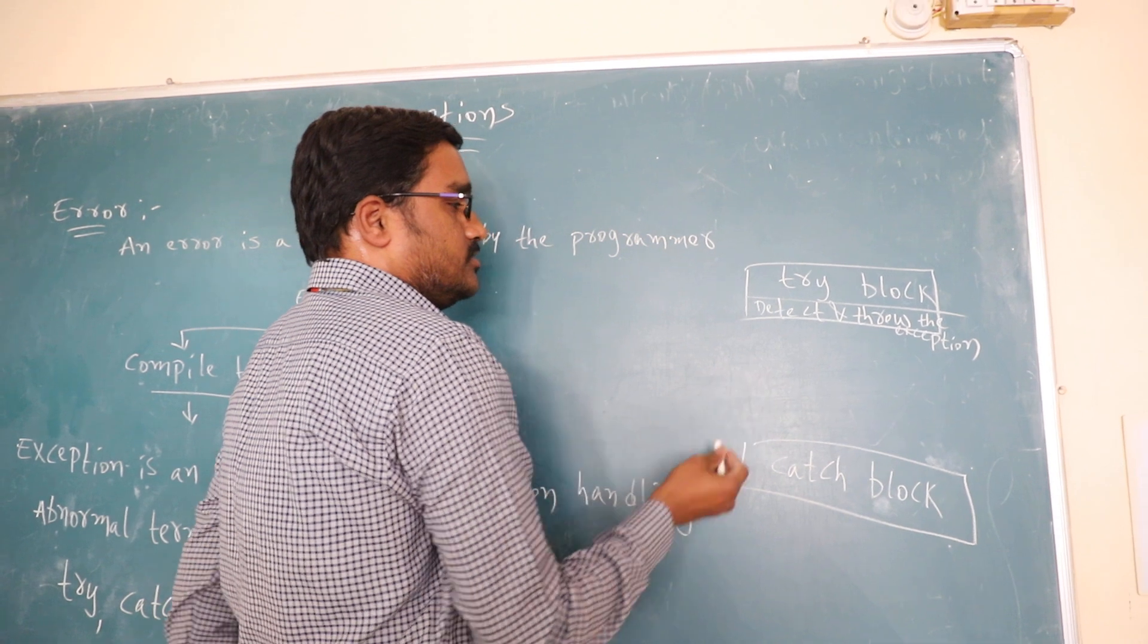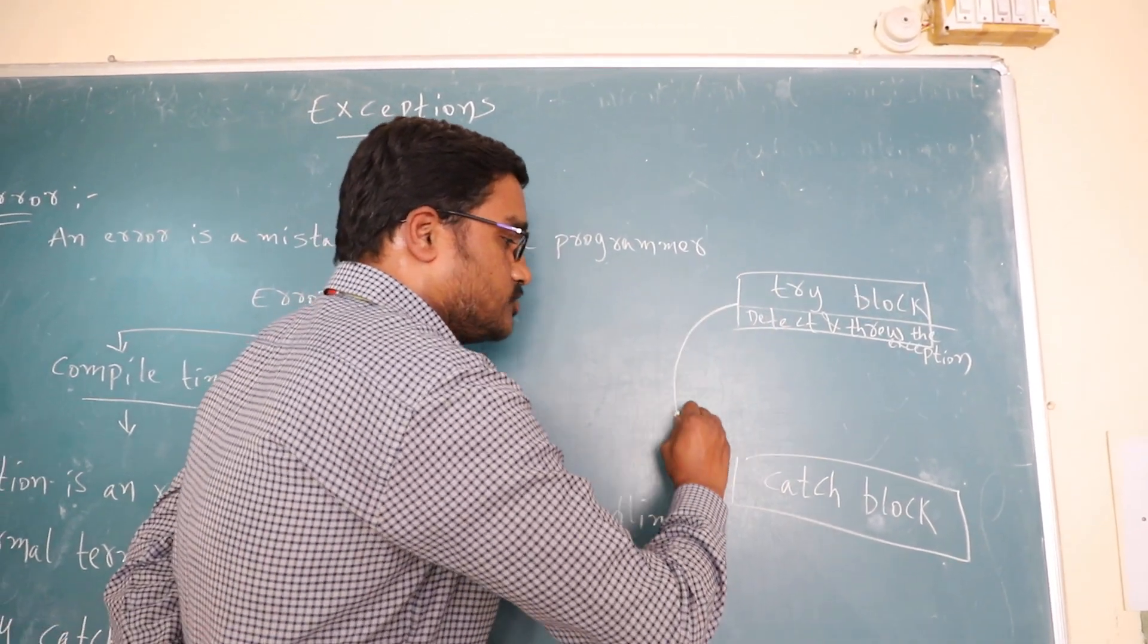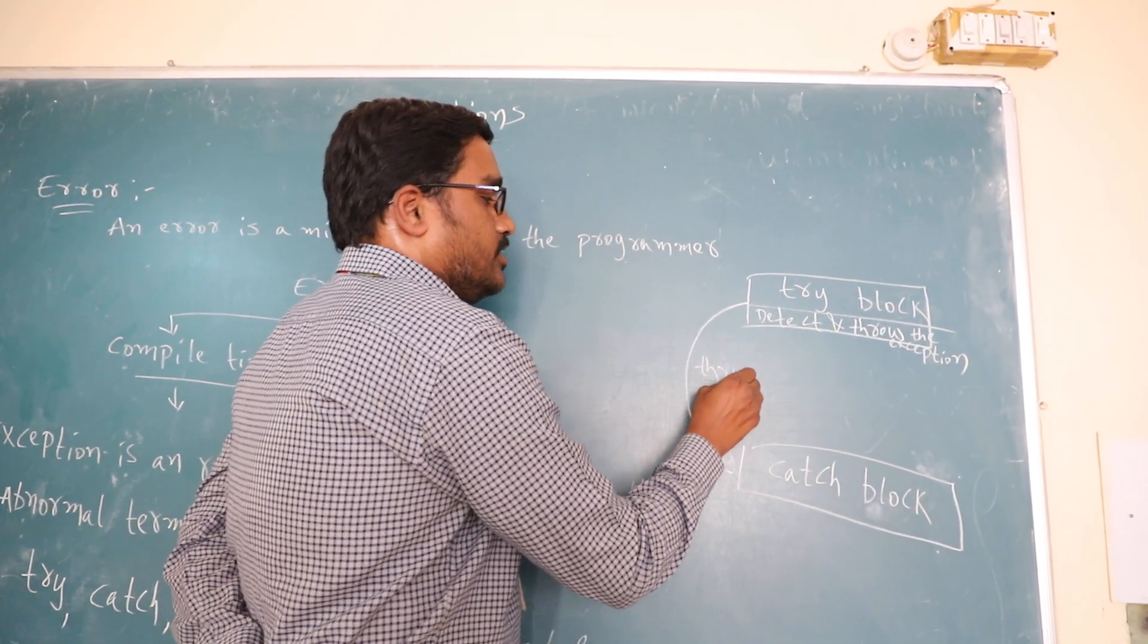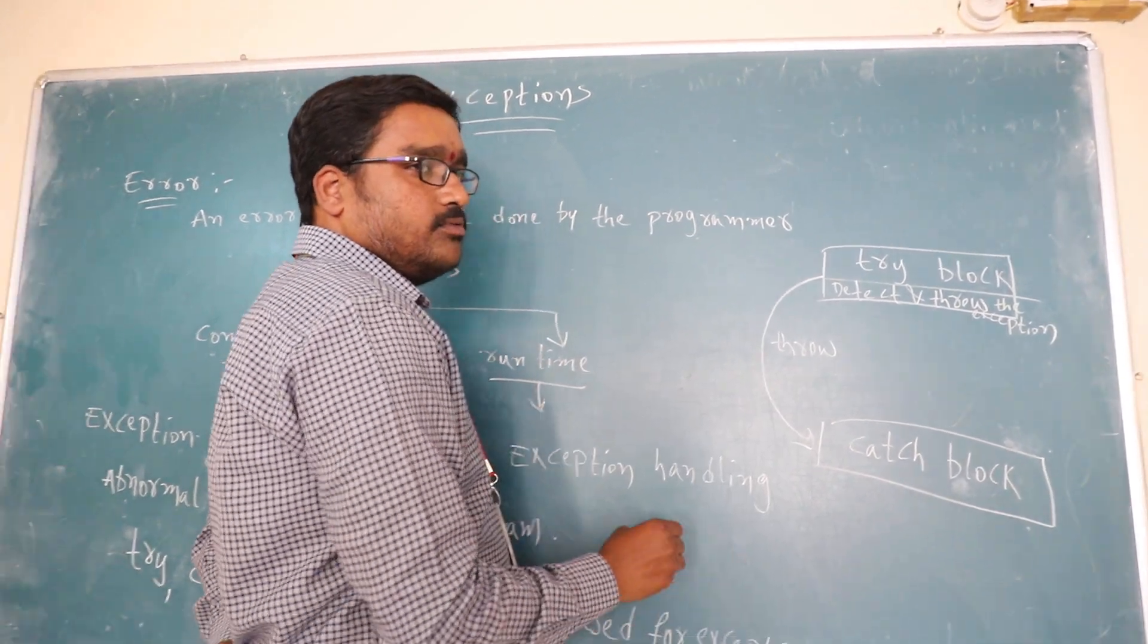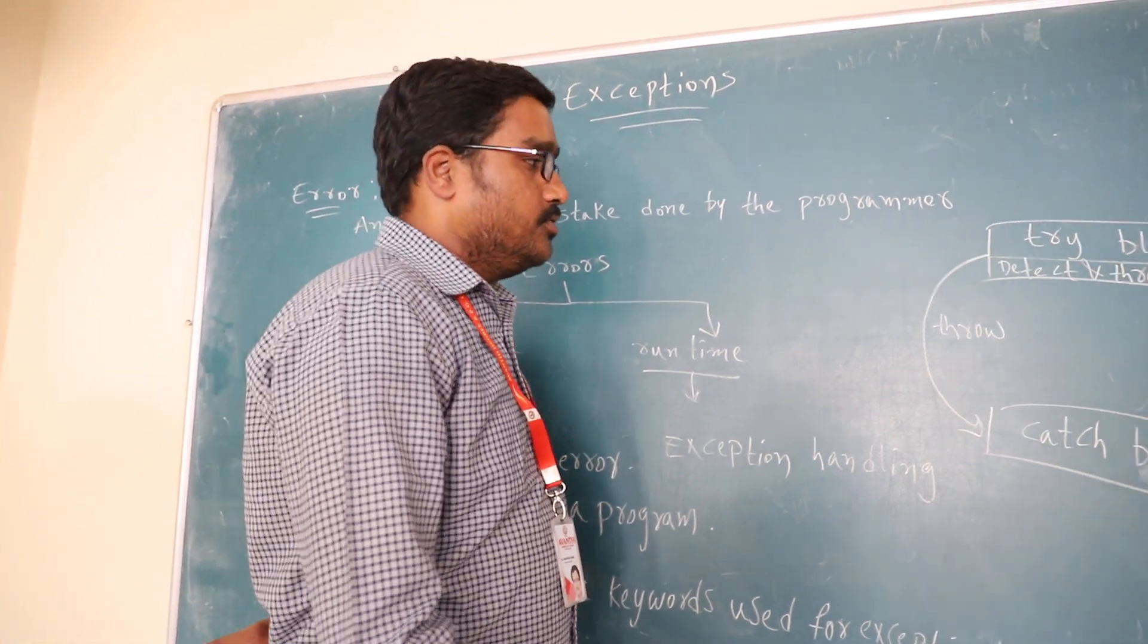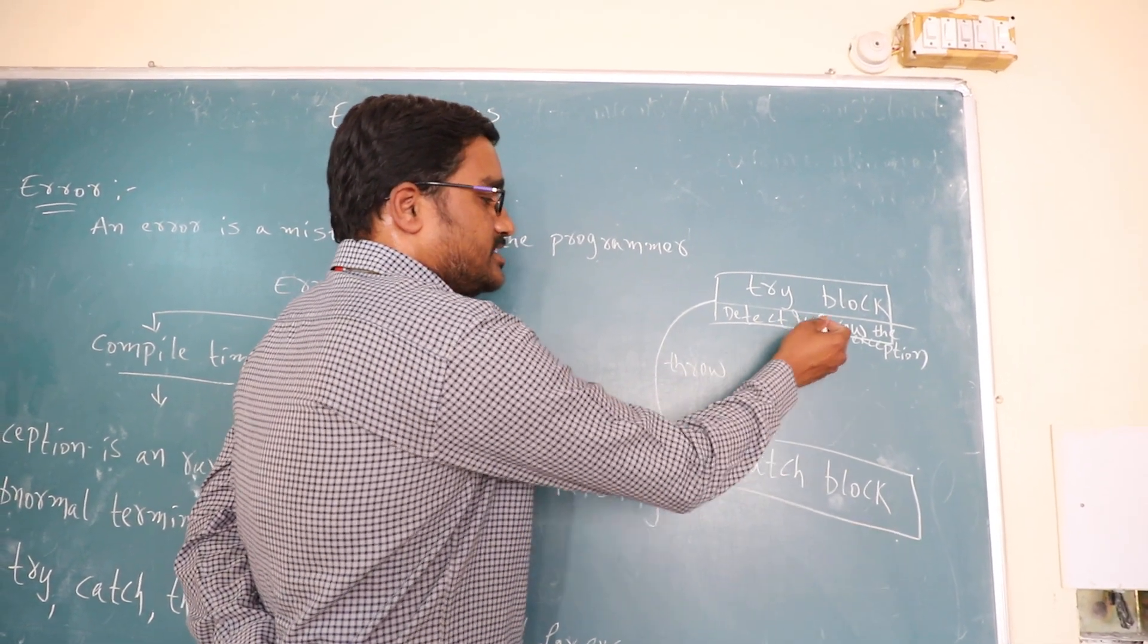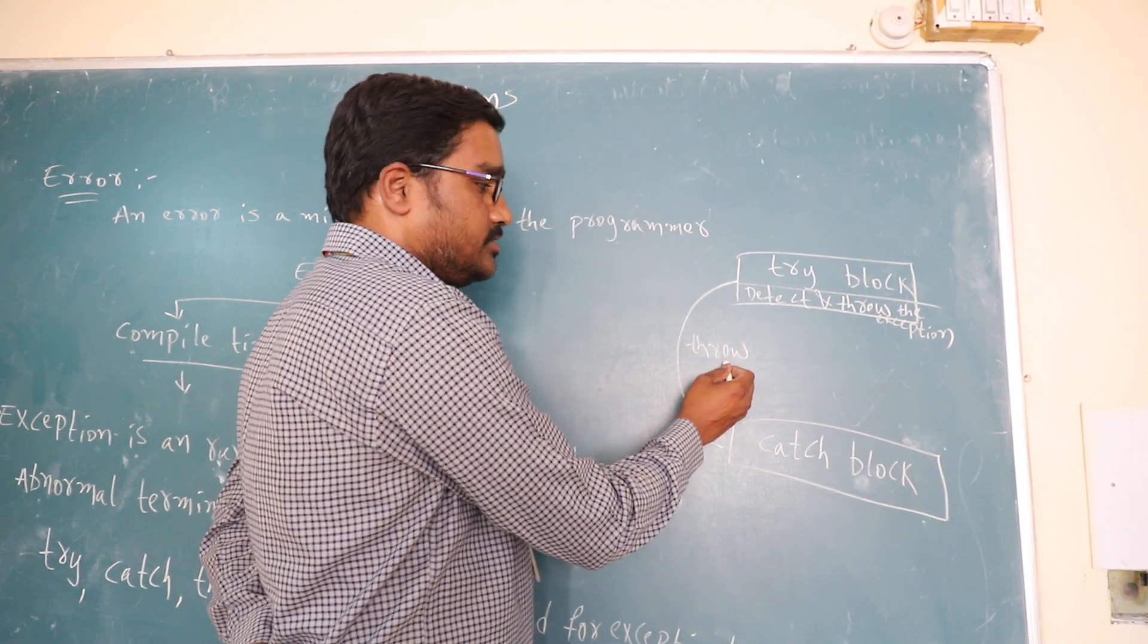And whatever the exception which is detected, that is thrown to the catch block by means of a keyword called throw. And here, try block will throw some exception by means of an object, throw. And that object must be handled by the catch block.